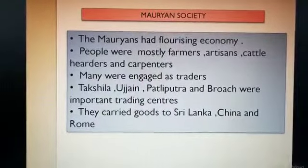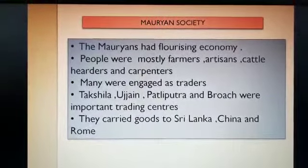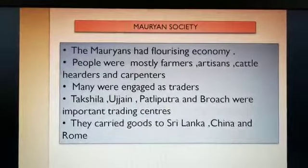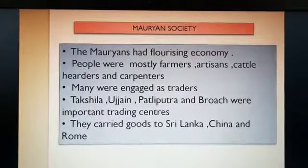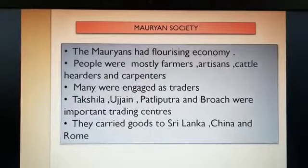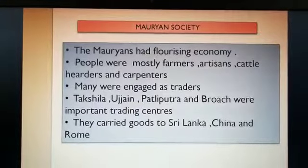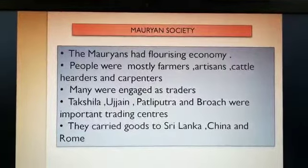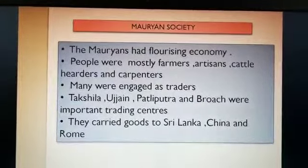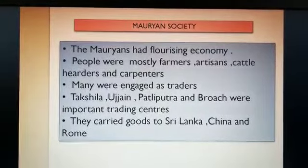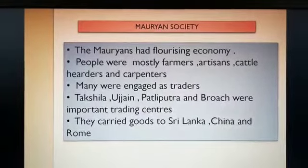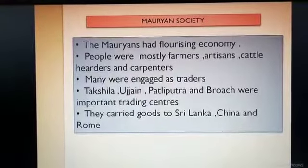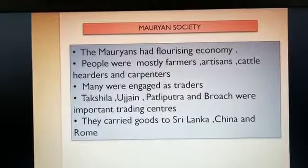Now we will come to Mauryan society and economy. The Mauryans had a very flourishing economy, meaning the economy was very strong with a lot of money in the market. People were mostly engaged as farmers, artisans, cattle herders and carpenters. Artisans means the people who made things, cattle herders means those who took cattle for grazing, and carpenters are those who made things out of wood. Many were also engaged as traders, meaning buying and selling things in the market on a large scale.